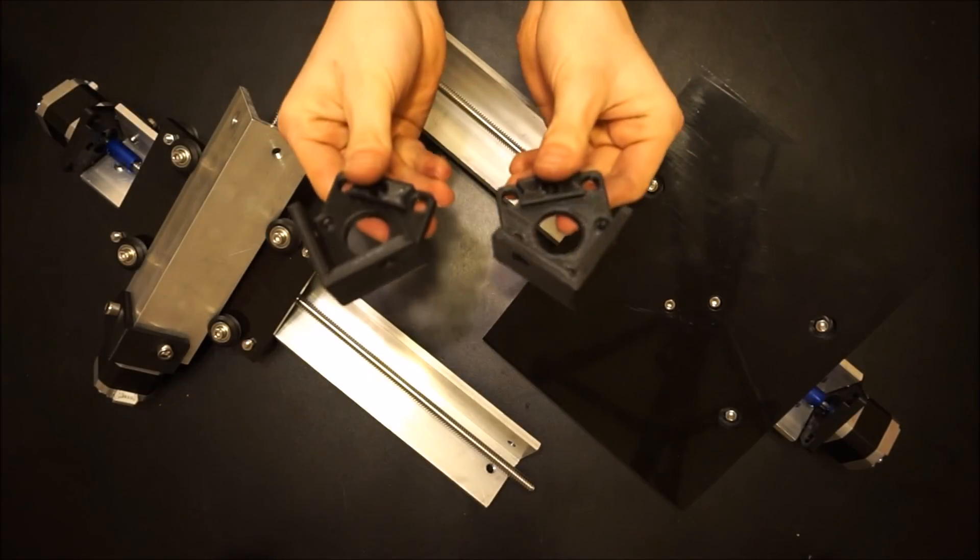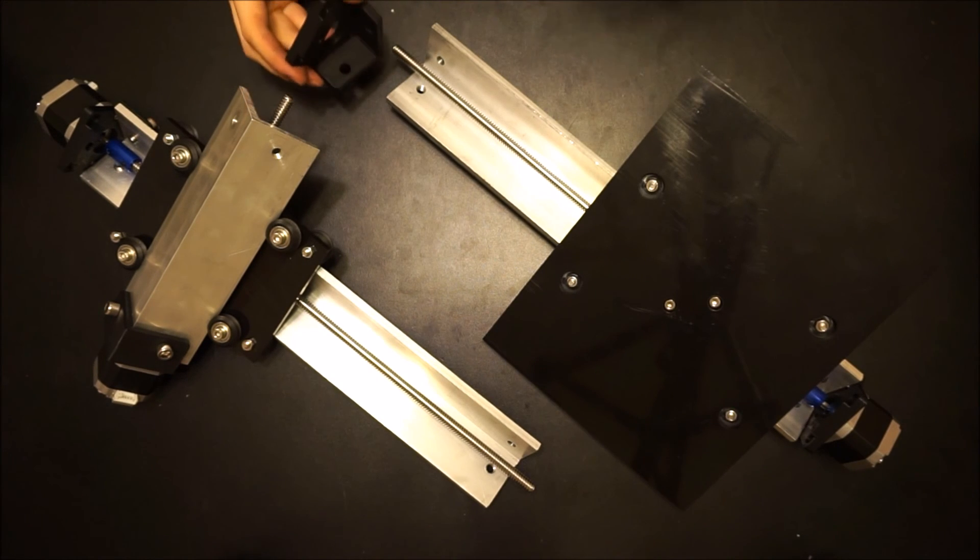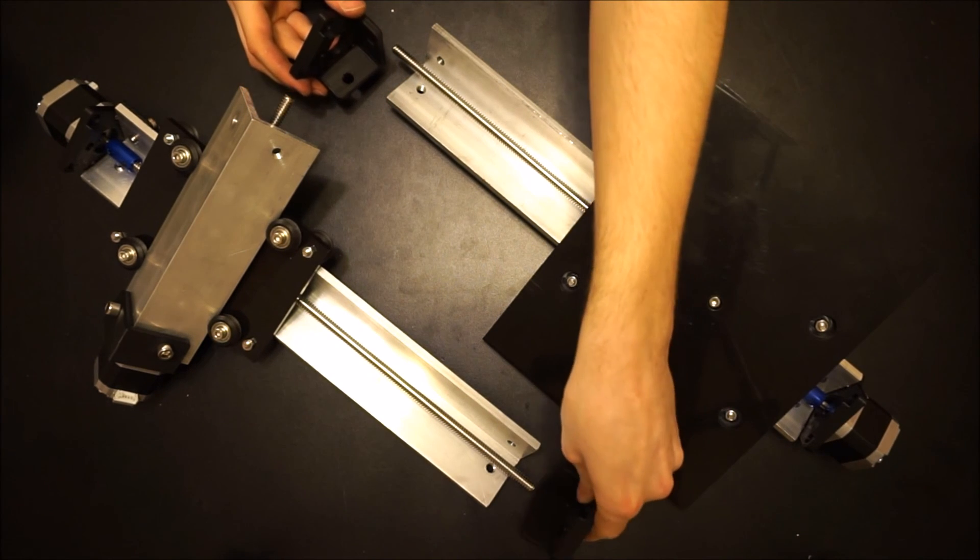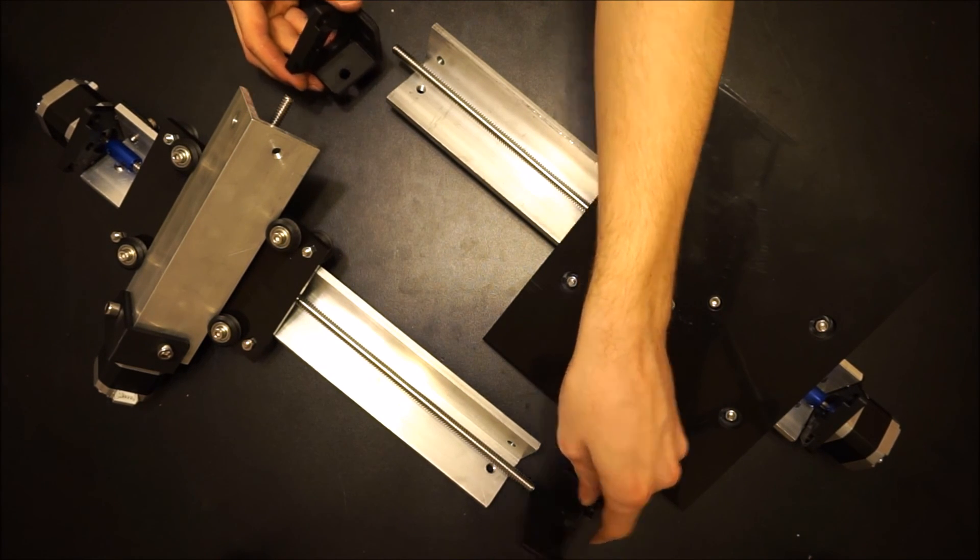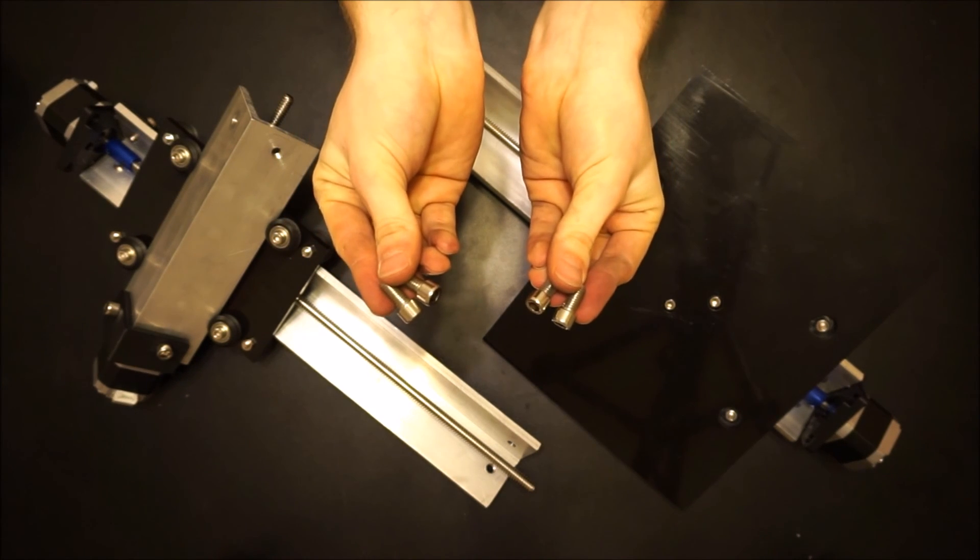Once the rails are installed on the gantries, one of the last steps is to cap off the X and Y axes with the two remaining rail mounting brackets. Use two short M8 bolts for each of these.